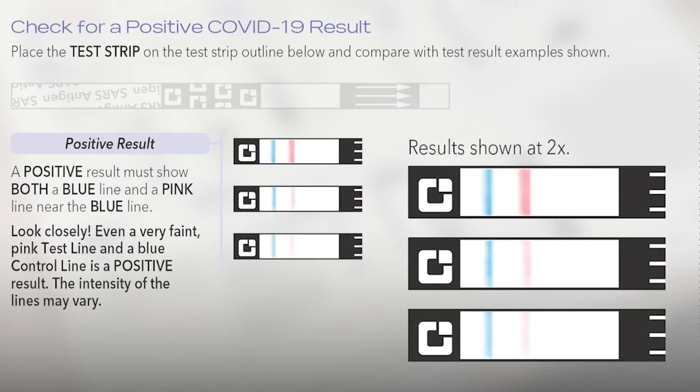If you have COVID, there will be both a blue line and a pink line near the blue line. Look closely. Even a very faint pink test line and a blue line is a positive result. These are all examples of a positive test for COVID.